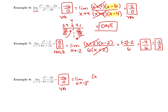Factoring x squared minus 25: it's a difference of two squares, giving (x + 5)(x − 5). In the bottom, pulling out an 8 gives 8(x + 3). Nothing cancels. But this is a one-sided limit — the limit as x approaches negative 3 from the right only — so we don't need to make both sides of the table. We want to approach negative 3 from the right, which means using negative 2.9.